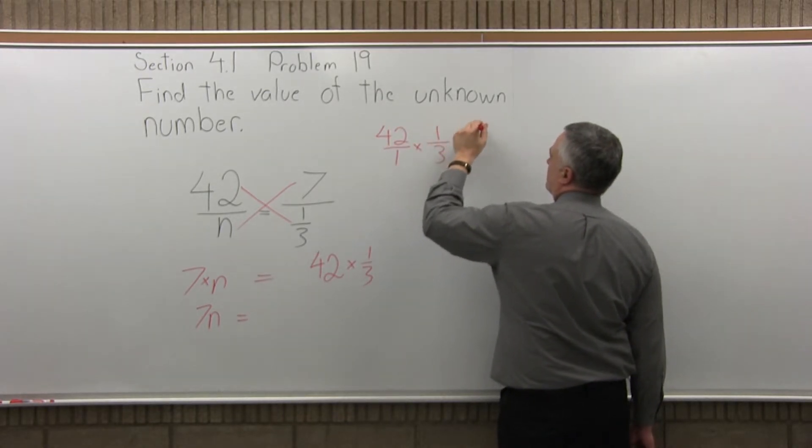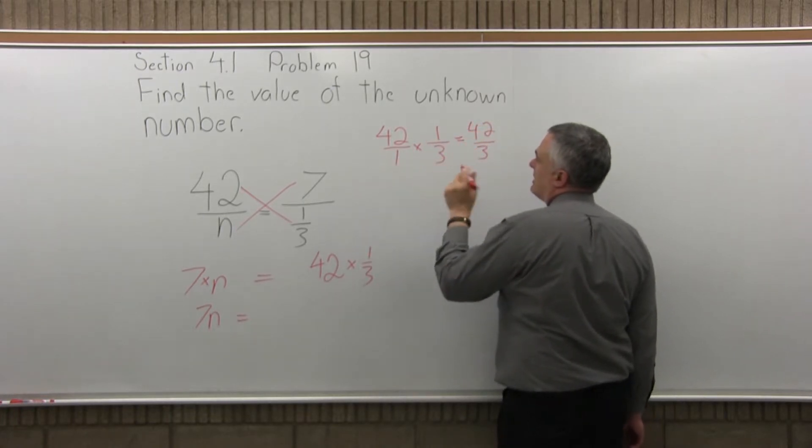The top: 42 times 1 is 42. Bottom times the bottom: 1 times 3 is 3. Now, if you didn't notice that it would reduce, this represents the division 3 divides into 42.